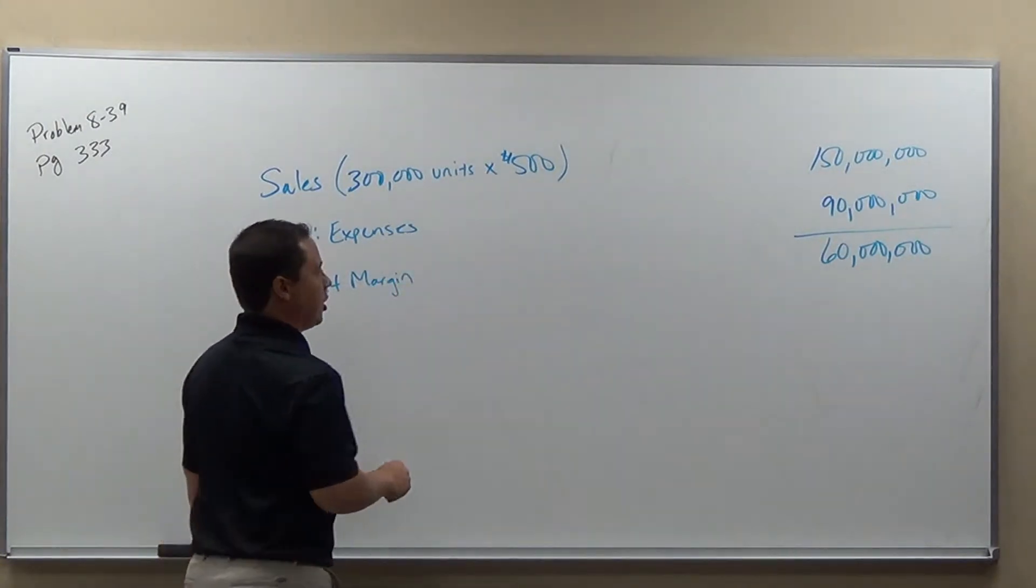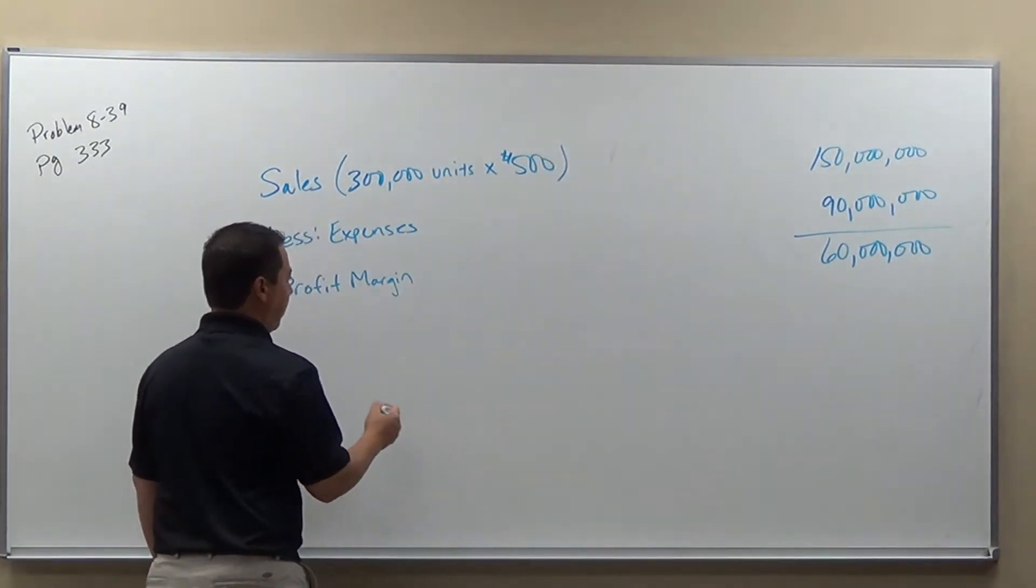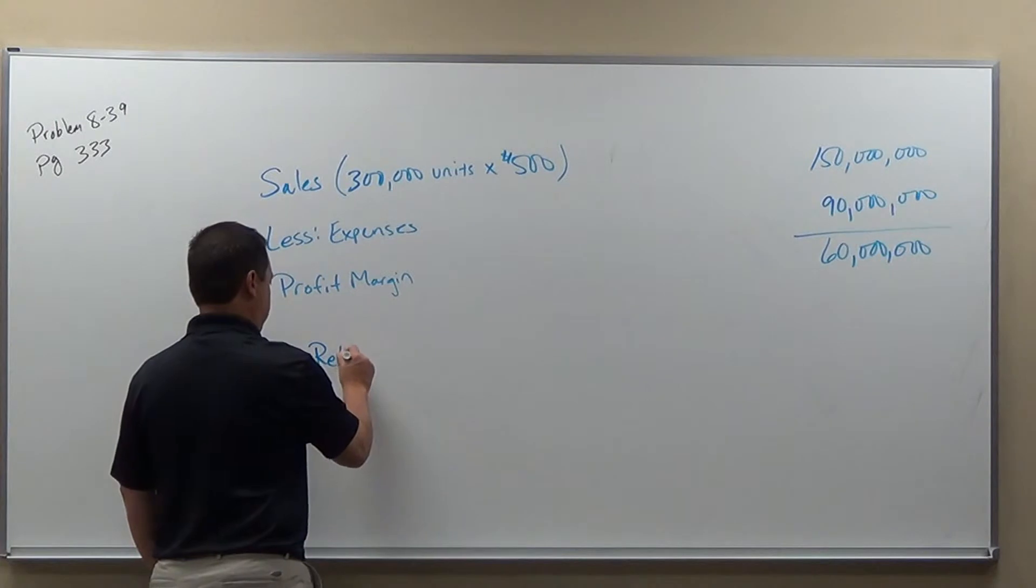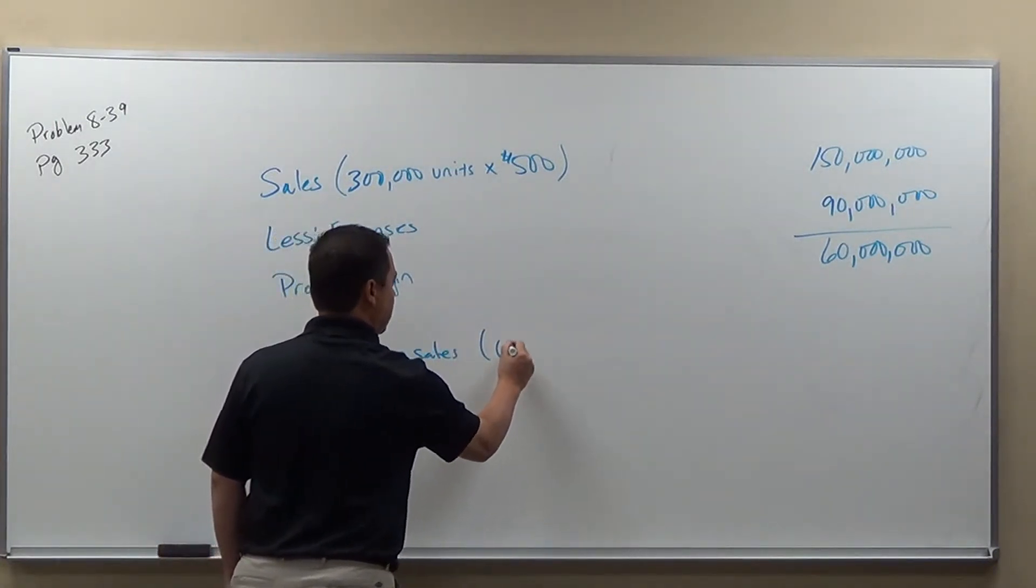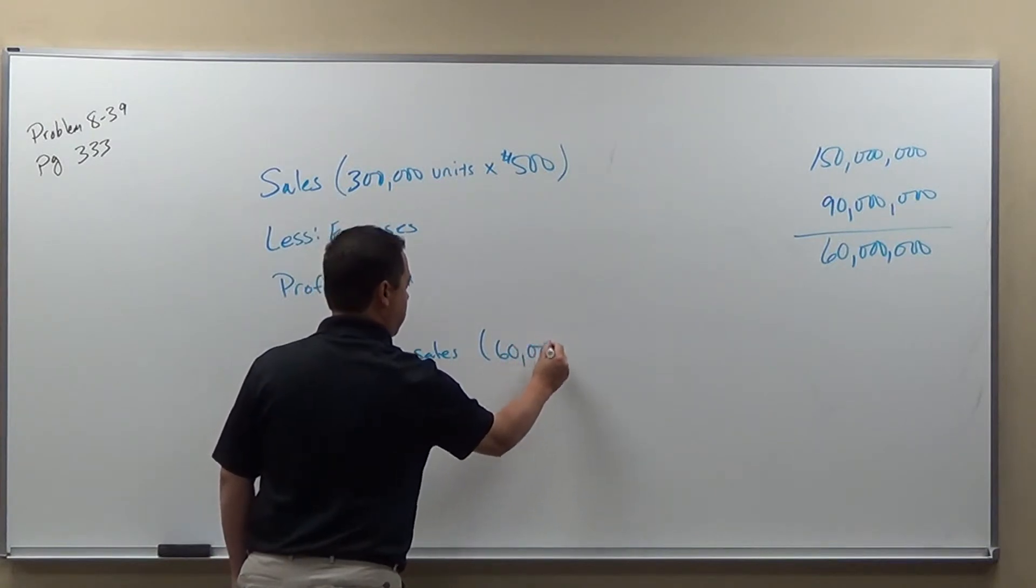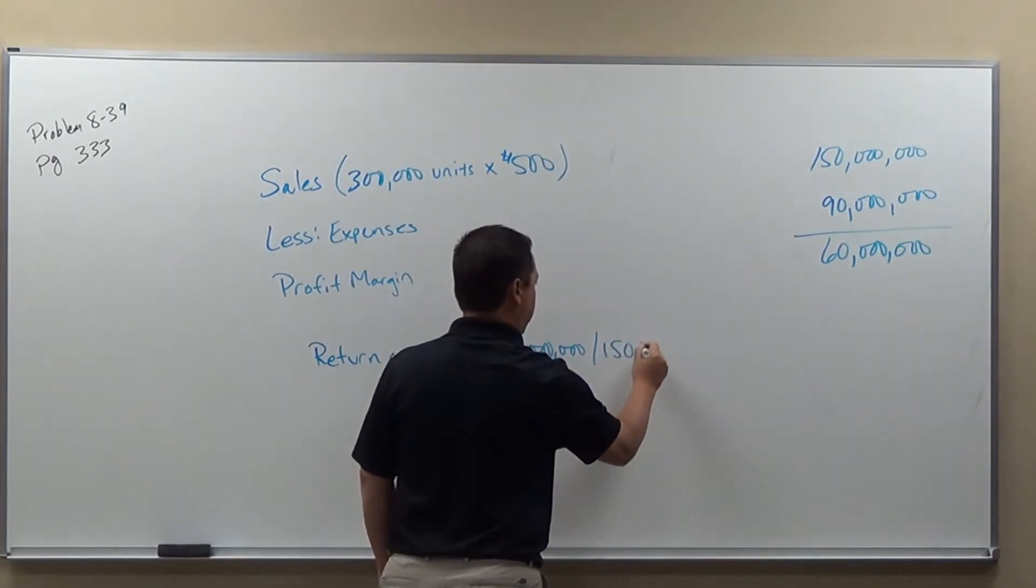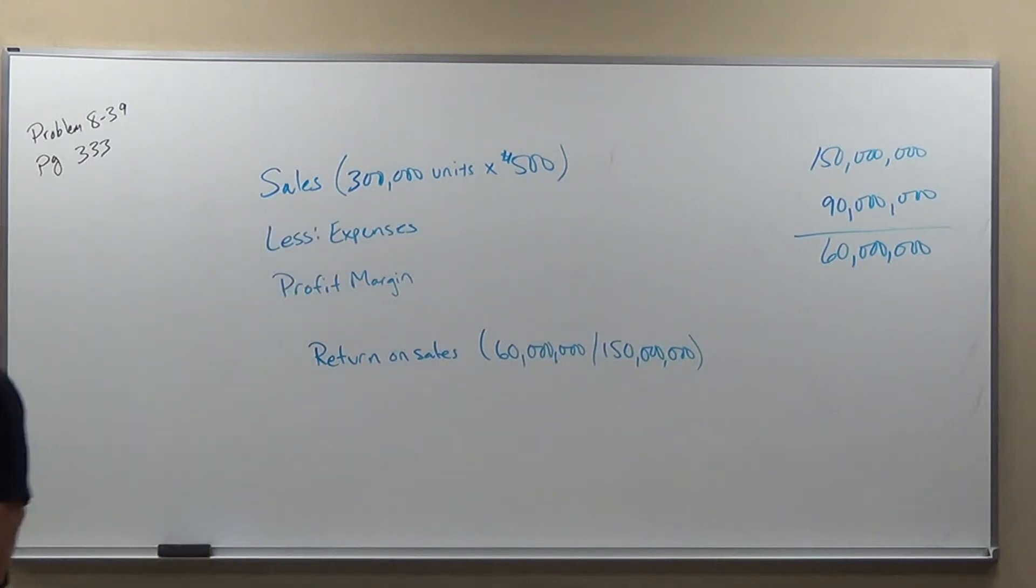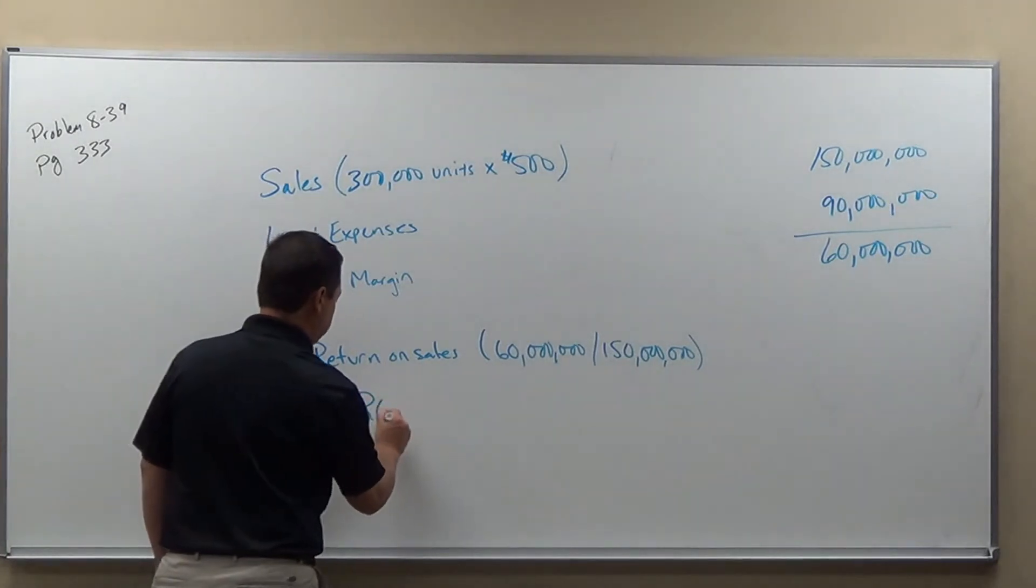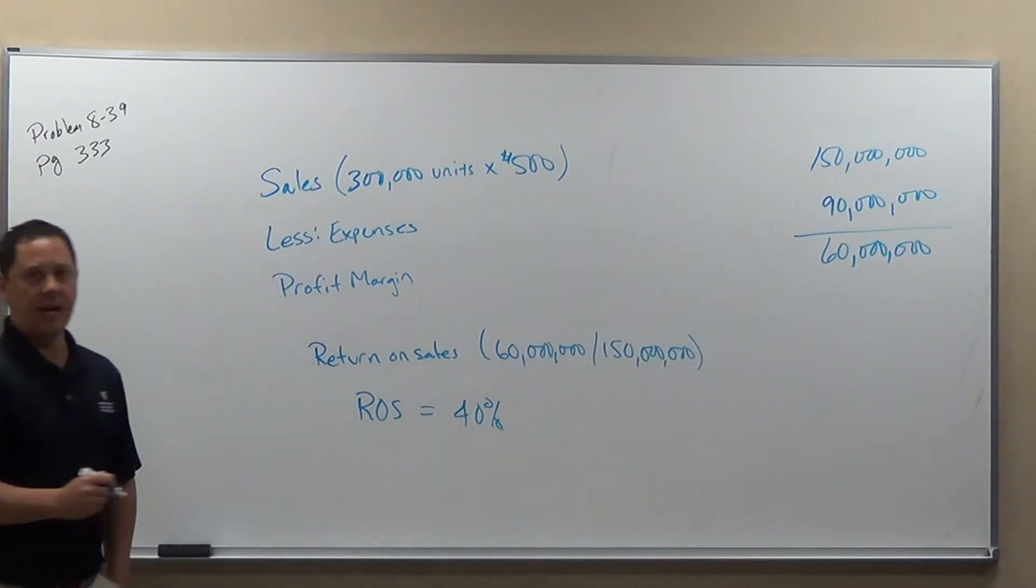Now that profit margin is also how we could look at is our return on sales. That's what we're going to take a look at here. So to figure that, we're going to have our return on sales. I will take that $60,000,000 and divide that by the $150,000,000 in sales that I have. That will give me the percentage for my ROS, return on sales. That equals 40%. So does that meet the 45 expected?